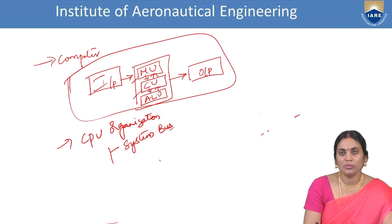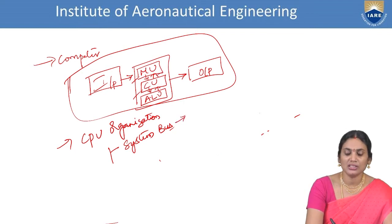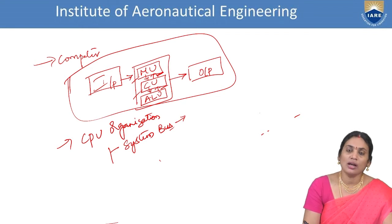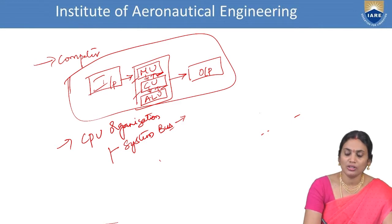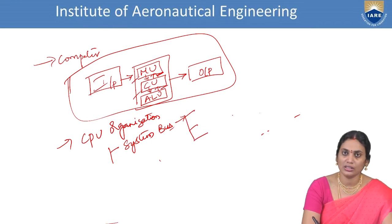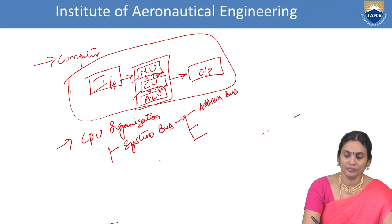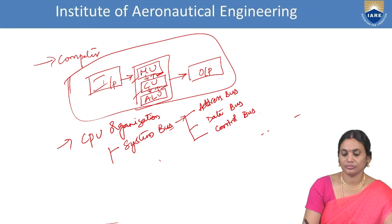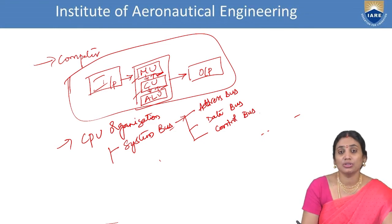The system bus is nothing but the interfacing structure — it is a group of lines intended to provide communication and act as an interface between each unit connected inside the CPU. We discuss three types of system bus: the first is the Address Bus, the second is the Data Bus, and the third is the Control Bus. These three special buses handle interactions between all units connected inside the CPU.